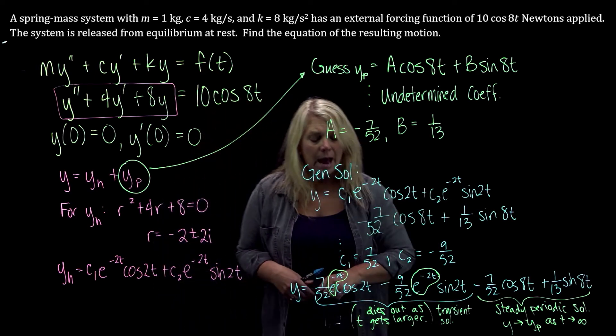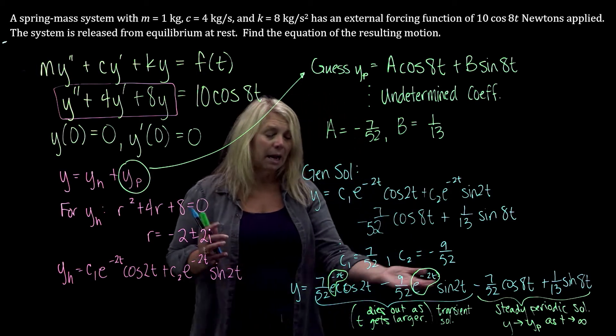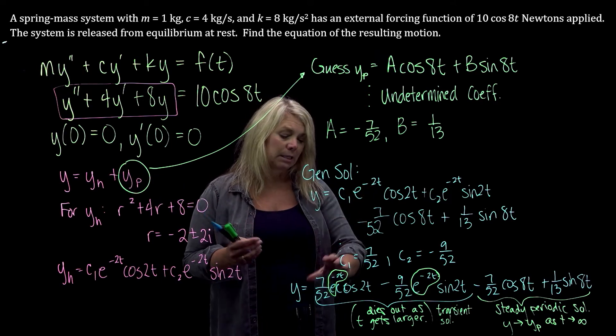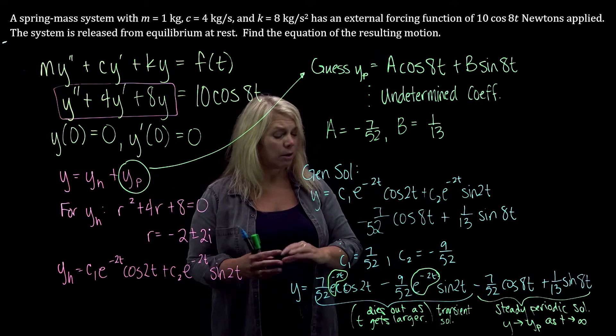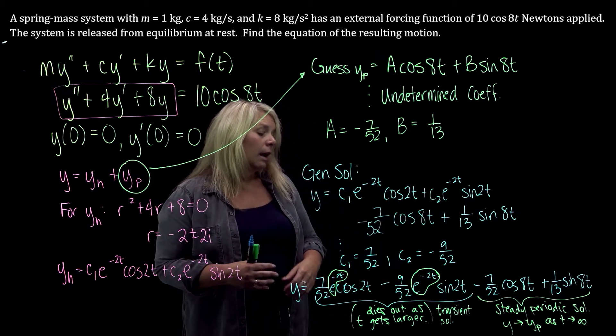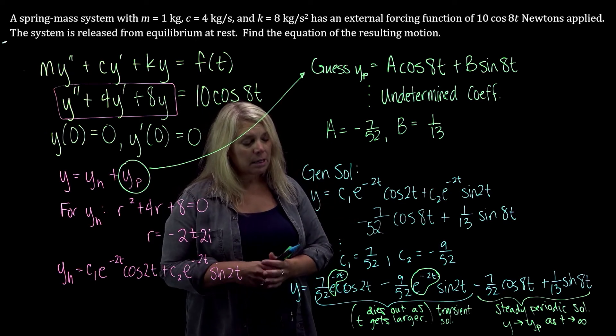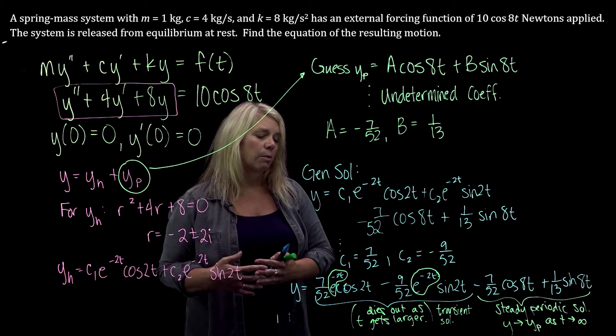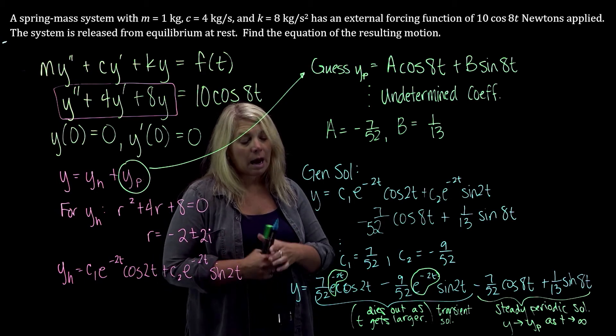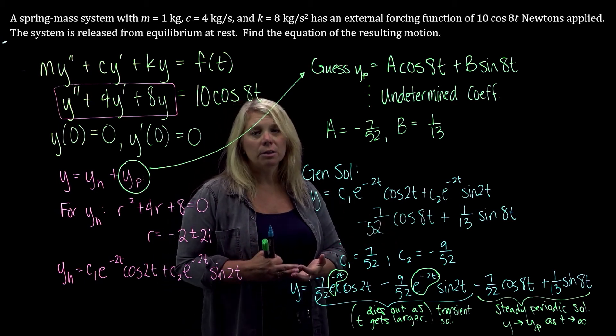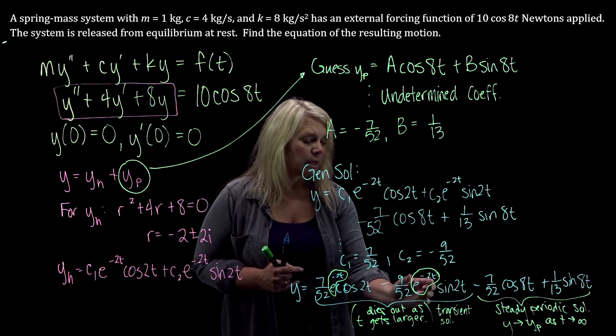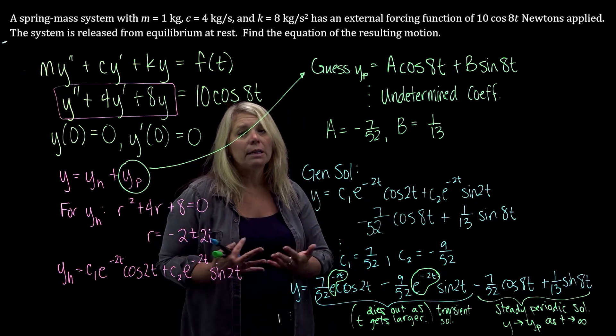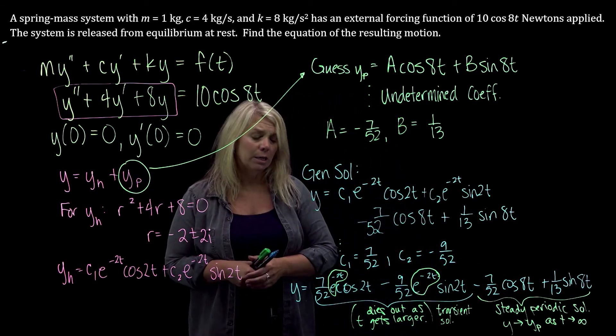So a couple things to think about with that, sort of how long does it take for this one to become negligible? You could look at some graphs to think about that. You could determine from some numerical calculations about when this amplitude gets below a certain value so that you can kind of see when that dies out. But the other thing I want to say about that too, this is perfectly fine to leave your solution like this if you're just trying to solve the differential equation and think about the solution. I would maybe ask you to identify the parts of the solution that die out when t gets larger, right? So the key here is this exponential decay, causing these parts to die out. What happens eventually to the solution? Then it approaches this. So I would ask you some concept questions about that.